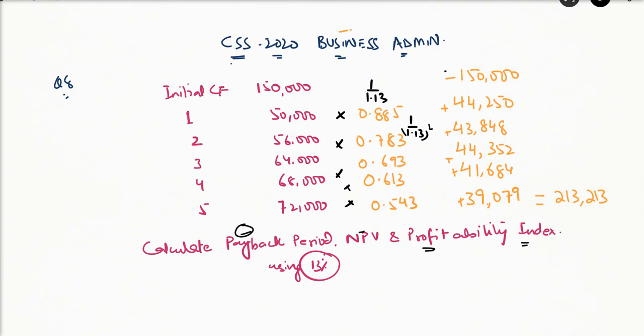So this 0.85 is basically 1 divided by 1.13 squared, 1 divided by 1.13 cubed, and so on. After multiplying it with the factors, I have also calculated the cash flows. These are the cash flows.